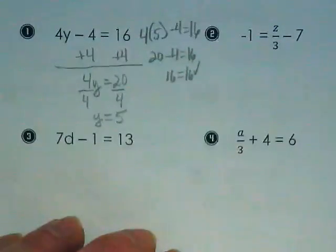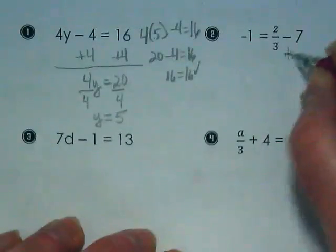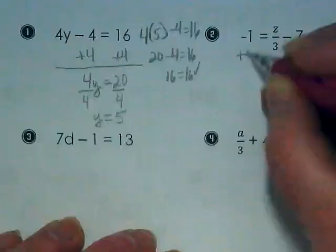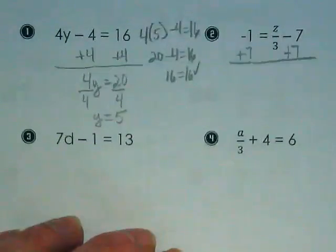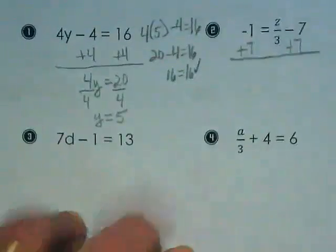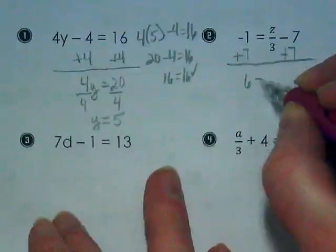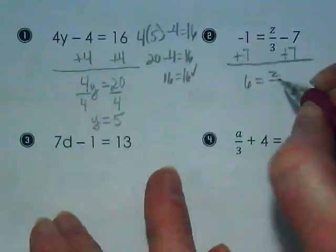Problem 2 has a fraction in it. We're not going to pay attention to the fraction at first because our first thing is to combine like terms. We want to get this 7 together with this 1. Negative 1 plus 7 gives us 6 is equal to z over 3.